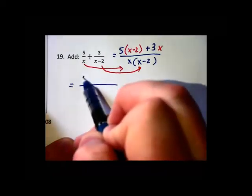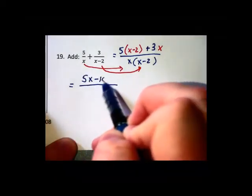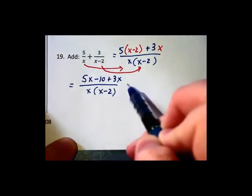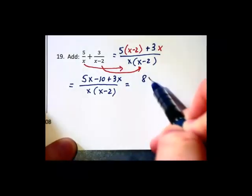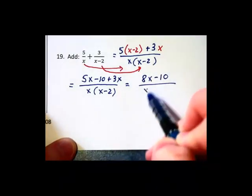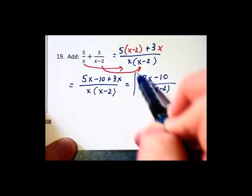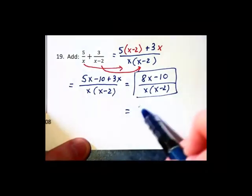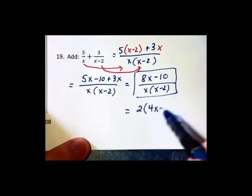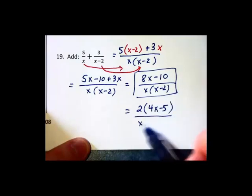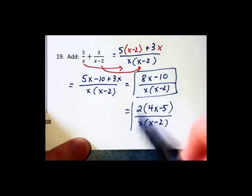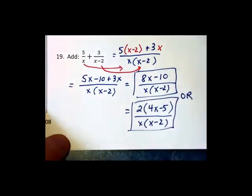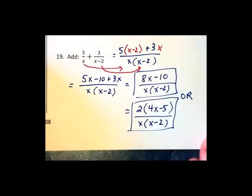Distributing in the numerator gives us 5x minus 10 plus 3x over this x times x minus 2. And we're going to combine like terms now to have 8x minus 10 over the x times x minus 2. And if you have some foresight the answer can stay there. You do need to check however that if you did factor the 2 out of the numerator and get 4x minus 5, that the 2 would not cancel with anything down below. And so we don't really have to leave it in that factored form. So either one of these with an or between them would be an acceptable way to write the solution.